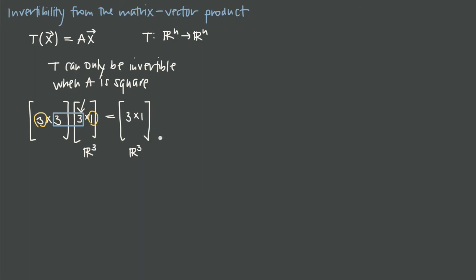Here's how we can prove that to ourselves. Let's say we're given some non-square, rectangular matrix A. We'll say A is the matrix with entries 3, 1, 0 in the first row and 0, 2, negative 2 in the second row. What we're going to do is use the null space and column space of this matrix to show why a rectangular matrix cannot give an invertible transformation.